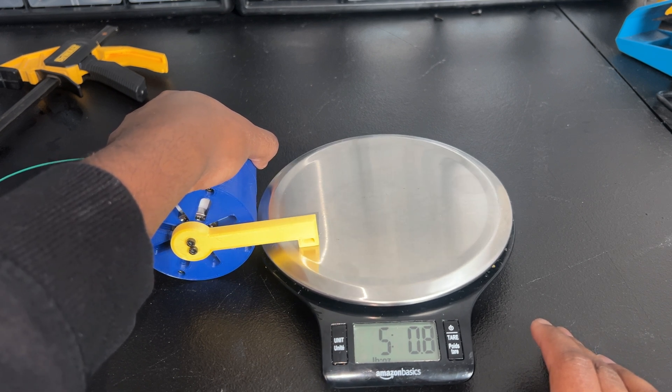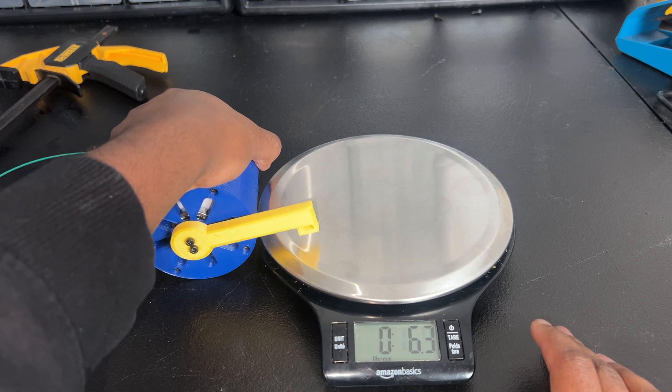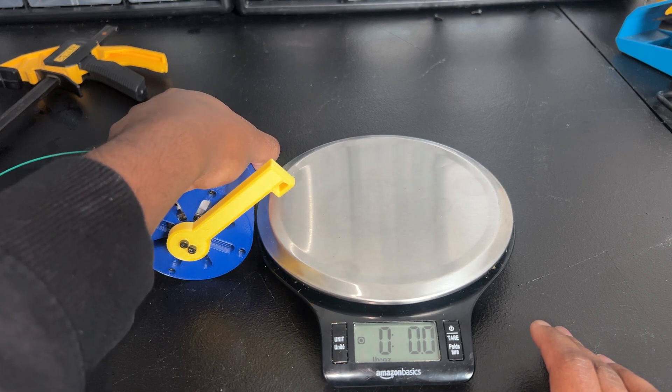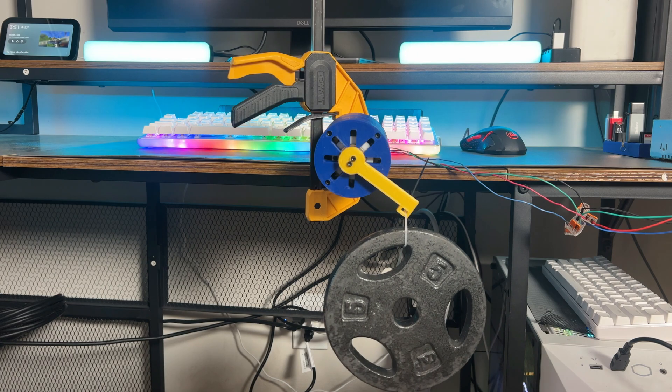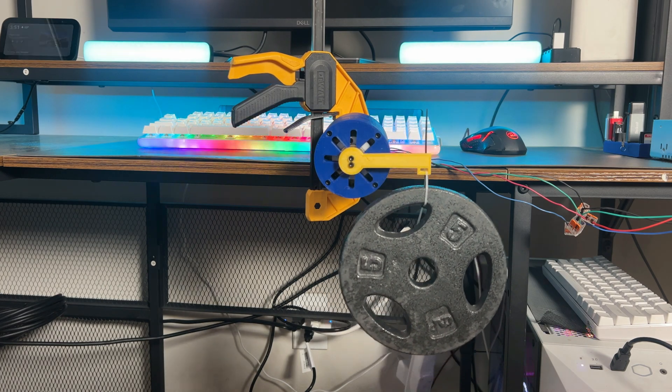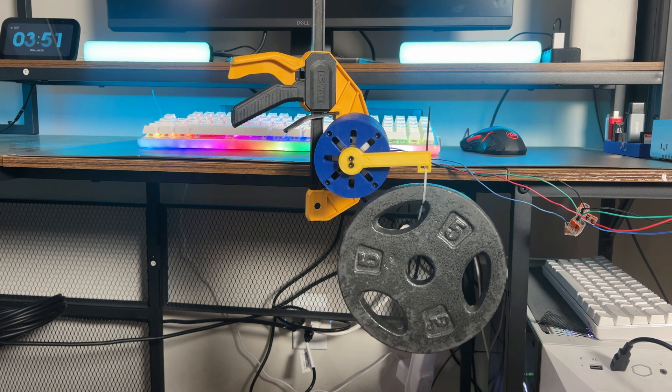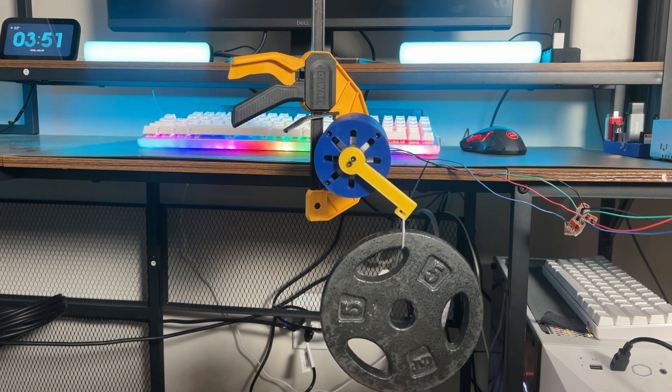So definitely an improvement. Technically we're supposed to be getting about 12 pounds, but of course a 3D printed gearbox is not going to be 100% efficient. But I do want to retest it with the weight to make sure we can at least lift up the five pound weight. We did lose some speed, but five pounds light work, not even worrying about it, it's doing five pounds for reps right now.